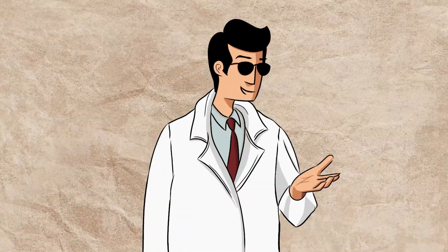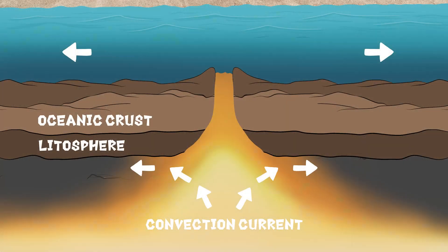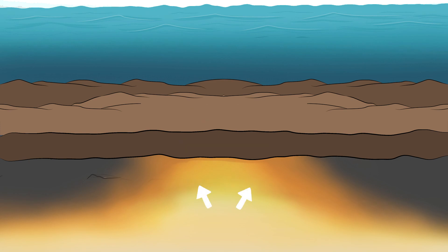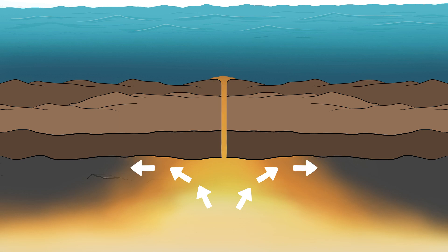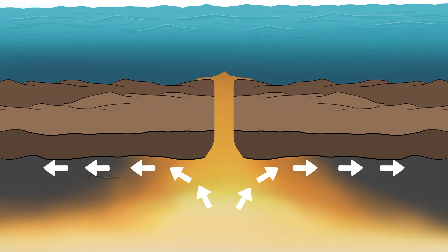Despite this compelling evidence, Wegener's theory was initially rejected because there was no known mechanism to explain how such large landmasses could move. It wasn't until the 1960s, with the discovery of seafloor spreading and the development of the theory of plate tectonics, that Wegener's ideas gained widespread acceptance. Scientists realized that tectonic plates move due to forces deep within the Earth's mantle, where heat and pressure drive their slow drift, leading to the creation of mountains, earthquakes, and the shifting of continents.